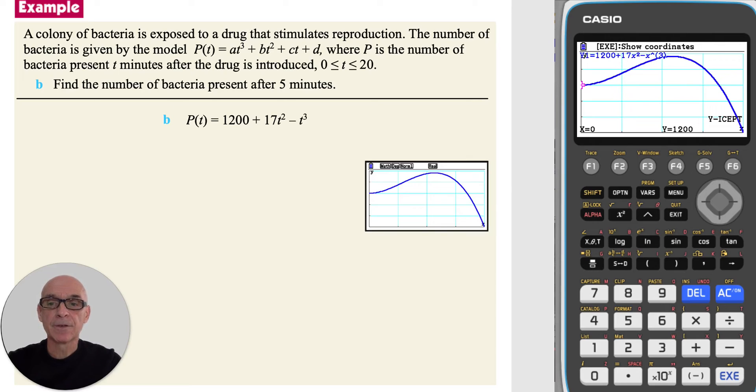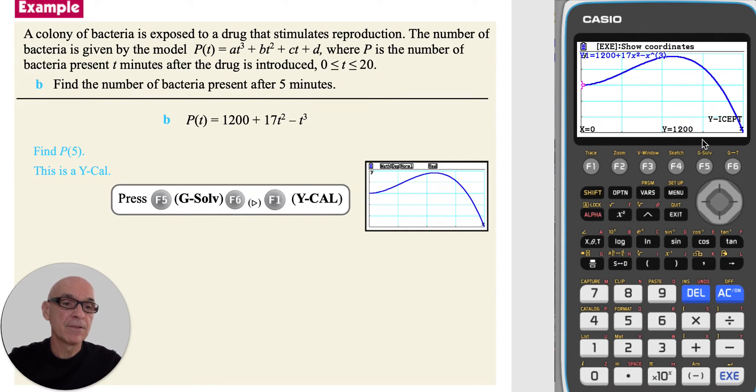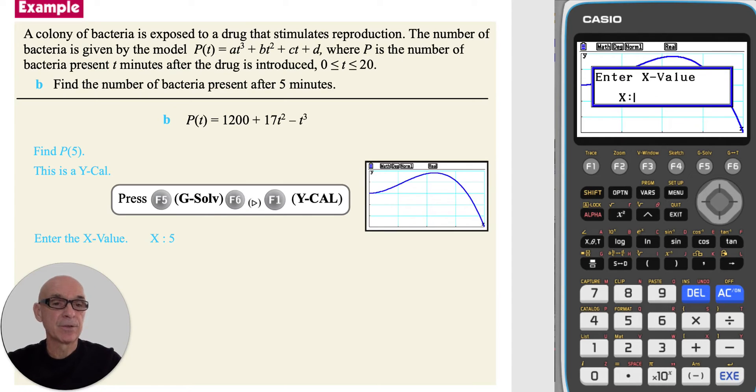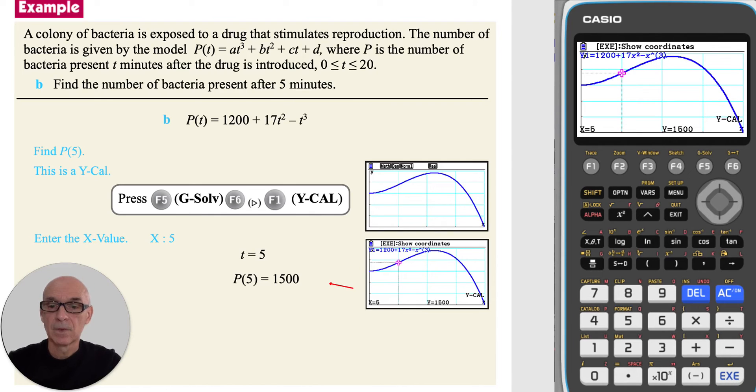In part b, to find the number of bacteria present after 5 minutes, we need to find p of 5. On the calculator, this is a y calculation. Pressing f5, gsolve, and then f6 to get to the next page of tabs, and f1 for a y calculation. Entering the value of t, or x, equal to 5, and pressing execute, giving p equals 1500. So the number of bacteria present after 5 minutes is 1500.